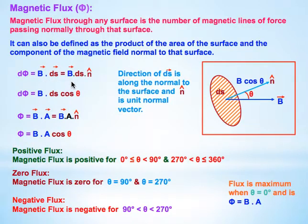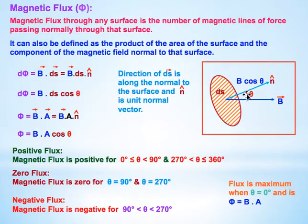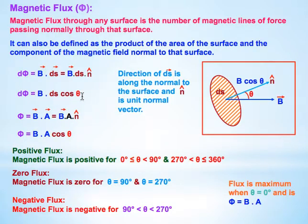We get B · dS · n̂, where n̂ is the unit normal vector. The direction of dS is along the normal to the surface, and n̂ is drawn perpendicular to the surface element. The angle between this unit normal vector and the magnetic field gives us theta. Using the dot product with cosθ, we get dφ = B · dS · cosθ, where θ is the angle between unit vector n̂ and magnetic field B.